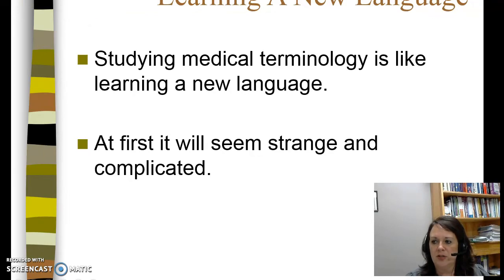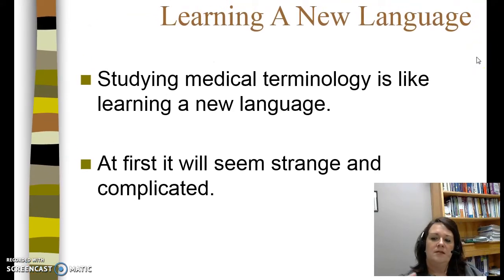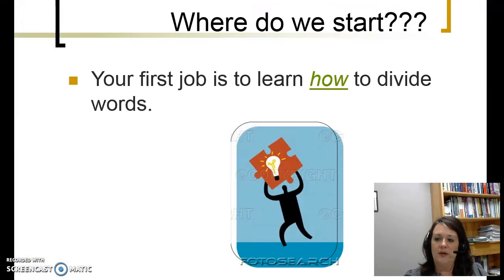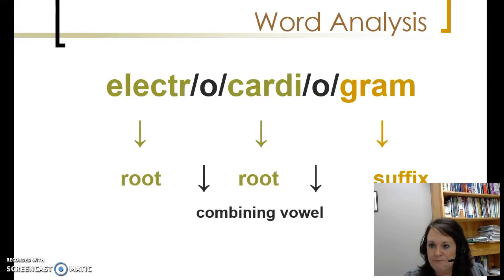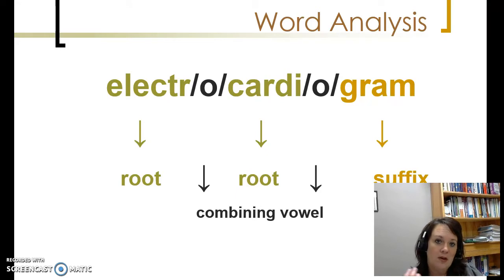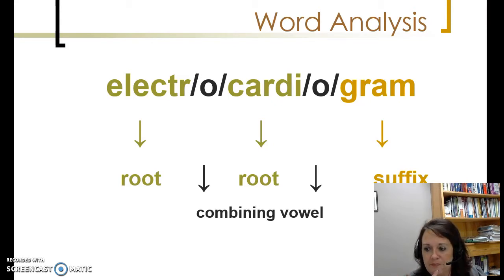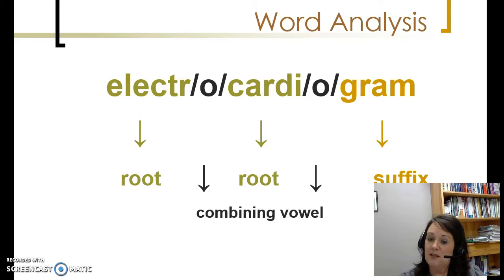Learning a new language — and that's really what medical terminology is — is learning a new language. Studying medical terminology is like learning that new language; it will first seem strange and very complicated. Your first job is to learn how to divide these words up. This term without any slashes is electrocardiogram — an EKG or ECG. Have you heard of those before? Electrocardiogram is what an EKG or ECG stands for. On this slide you can see we broke it apart: electro — you can see the arrow down there — it's a root. The O's are combining vowels. Cardi is a root and gram is a suffix.